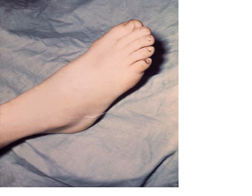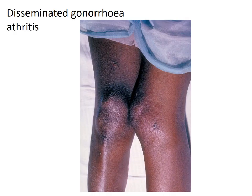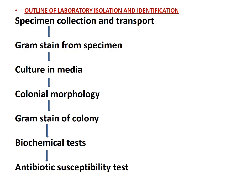Still looking at presentations of disseminated gonorrhea — this is a picture of disseminated gonococcal arthritis. For laboratory diagnosis, the basic outline used in bacteriology 98% of the time involves gram staining. A discussion of laboratory diagnosis includes laboratory isolation — how do we isolate the pathogen from the clinical specimen — and identification — what do we do to identify the isolate.